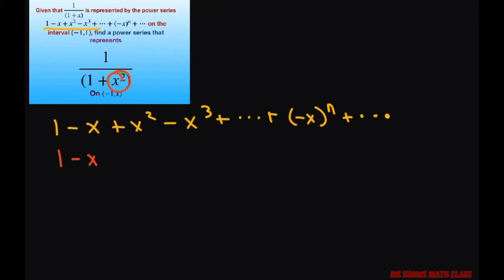You have 1 minus x squared plus x squared squared minus x squared cubed plus dot dot dot plus negative 1 to the nth power. I'm just pulling out this and then we have x squared to the power of n plus dot dot dot.